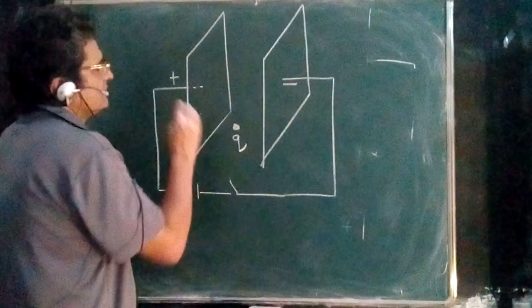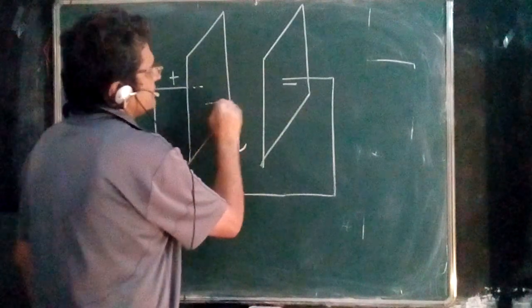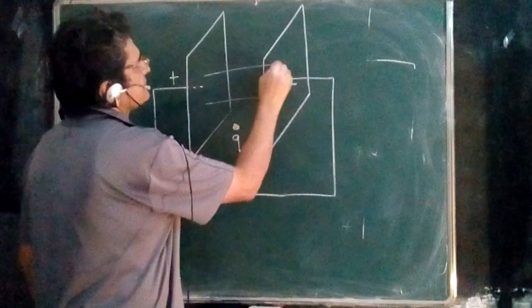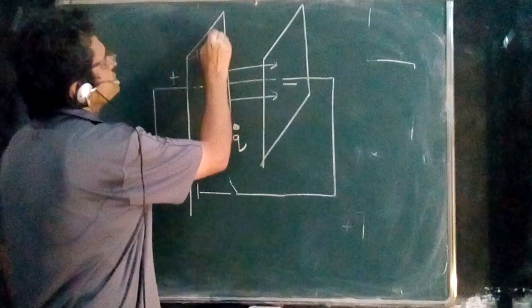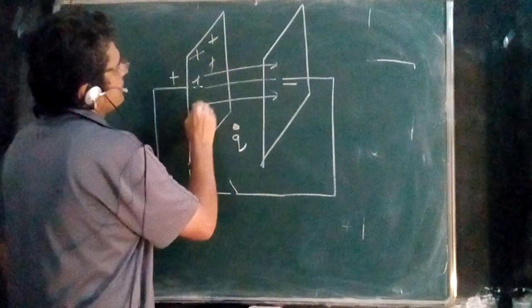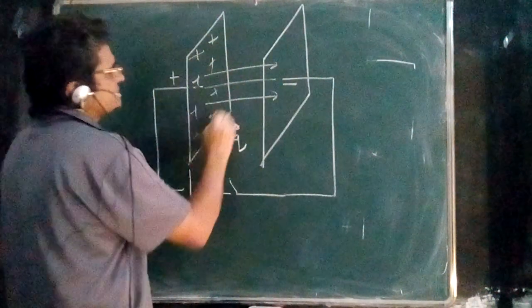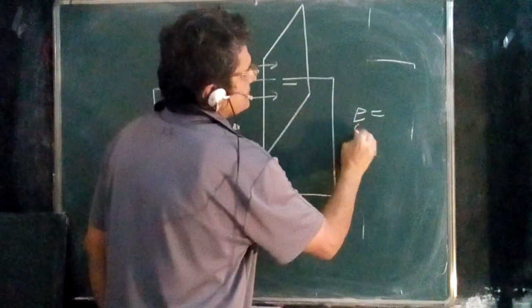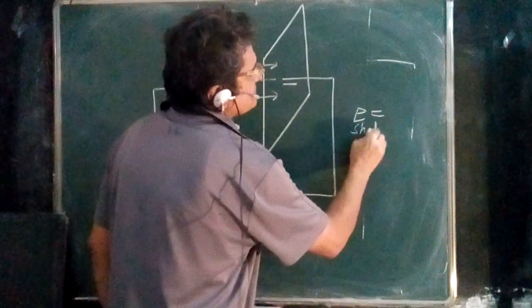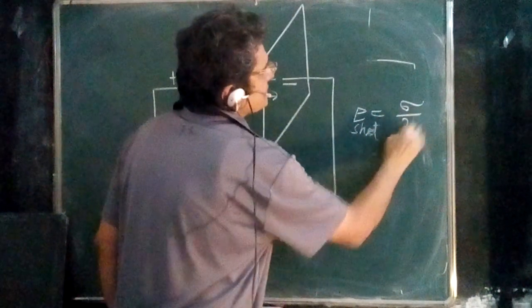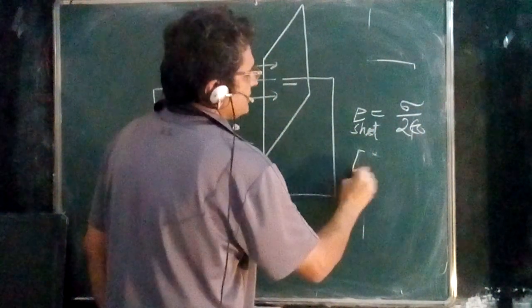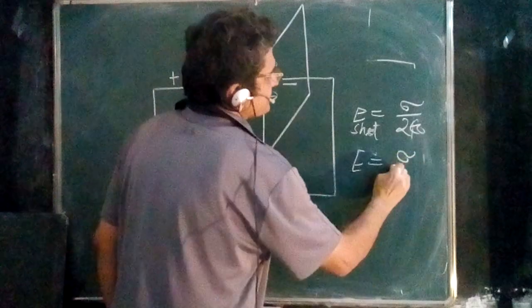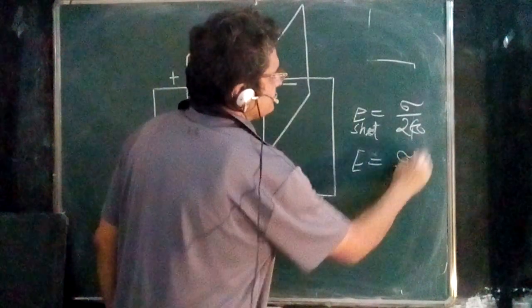First of all, when you find out the electric field inside the capacitor, you are taking two thin sheets which are contributing to the electric field, with each sheet producing Sigma upon twice E zero. That is why the electric field inside the capacitor is Sigma upon E zero - it is the combined effect of two sheets.